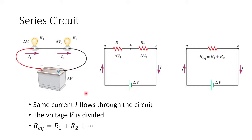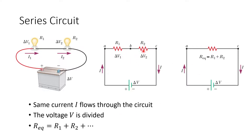So again, in a series circuit, the current is the same throughout the circuit — you measure the current only once. The voltage is divided among each different part, so it will be slightly different throughout the circuit, unlike the current that's the same no matter where you measure it. The equivalent resistance is basically the sum of each different resistor.